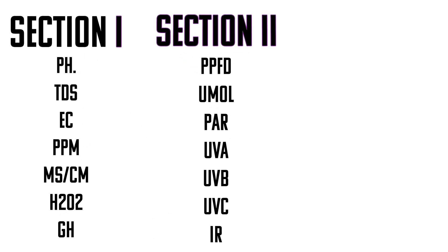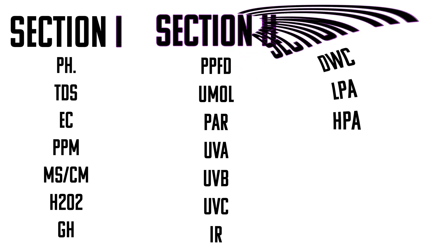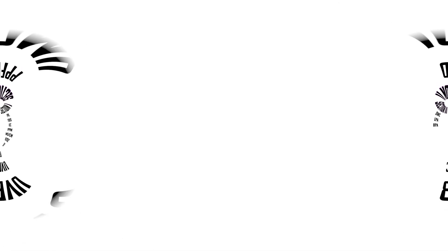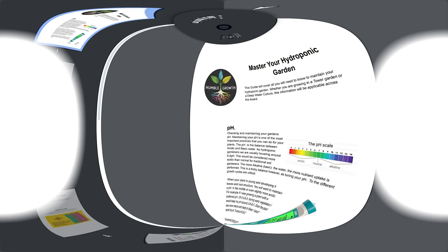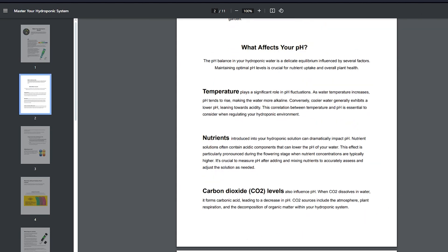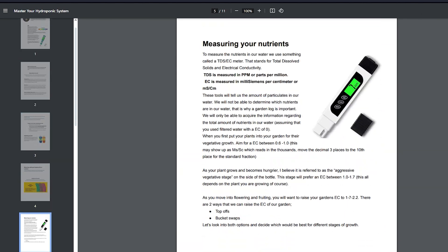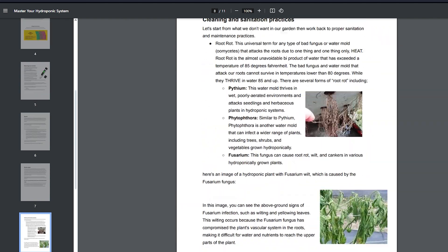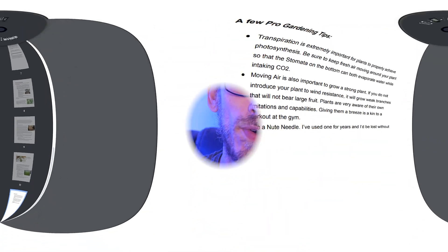I wanted to make this video to bust out 18 of the most popular hydroponic acronyms and explain what they mean in layman's terms, easy for anybody to understand. I broke this video down into sections: acronyms for nutrients, acronyms for lighting, and acronyms for hydroponic gardens. I also linked some of my favorite free guides in the description box below — make sure you download those, they're a great resource.